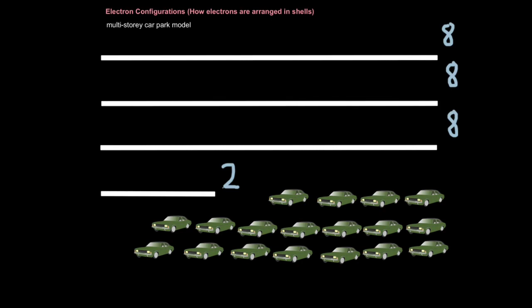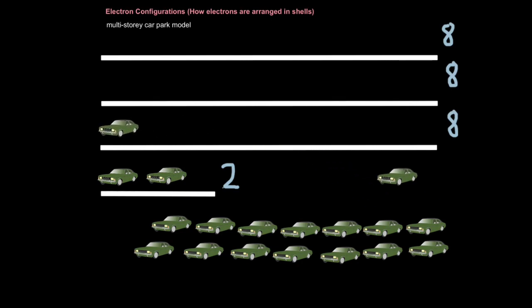To help you understand this, I'm going to use my multi-story car park model. So, imagine your local shopping center has a multi-story car park. Imagine on the first floor, there's only capacity for two cars, whereas on every other floor, every other floor can take up to eight cars. Now, realistically, if you were trying to park here, you'd probably fill the first floor first before moving to the next floor.